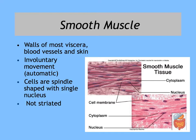Let's do a quick overview of all three types before we jump into skeletal muscle. Smooth muscle is found in the walls of most viscera — that's the fancy word for body organs — including blood vessels and skin. Smooth muscle is important for involuntary movement; most of its work is done automatically. The cells are spindle-shaped, pointy at the ends, with a single nucleus. There's no striation because the contractile filaments are lined up more randomly.